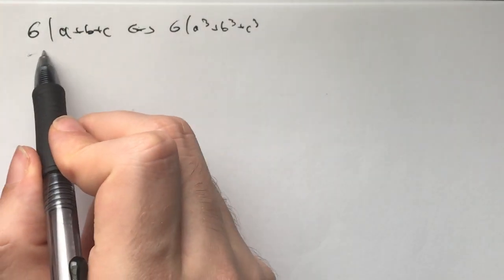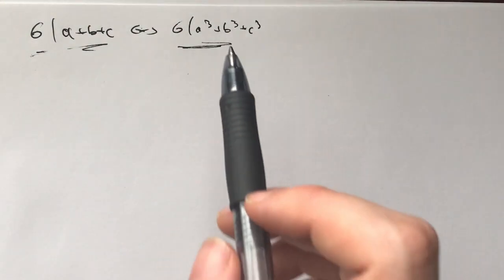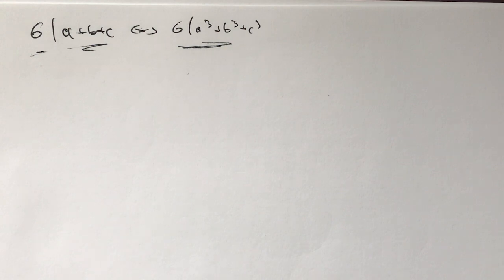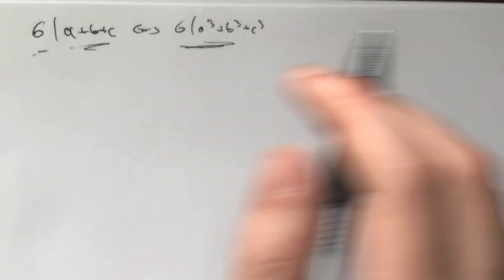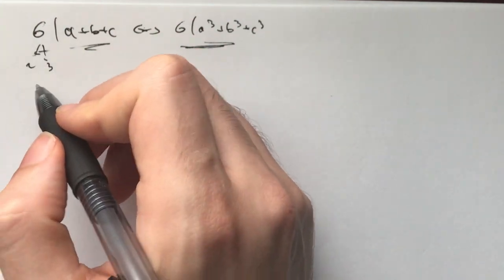So what we need to do is prove that 6 divides a plus b plus c, if and only if 6 divides a cubed plus b cubed plus c cubed. Now, there's many ways to go about this. One way that you might think of going about it is, okay, let me do 2 and 3 separately.